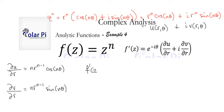So then, f prime of z will have to equal e to the negative i theta, right, right here. So, e to the negative i theta times du dr, so that's n, r to the n minus 1, cosine n theta, plus i times dv dr, which is n, r to the n minus 1, sine n theta.